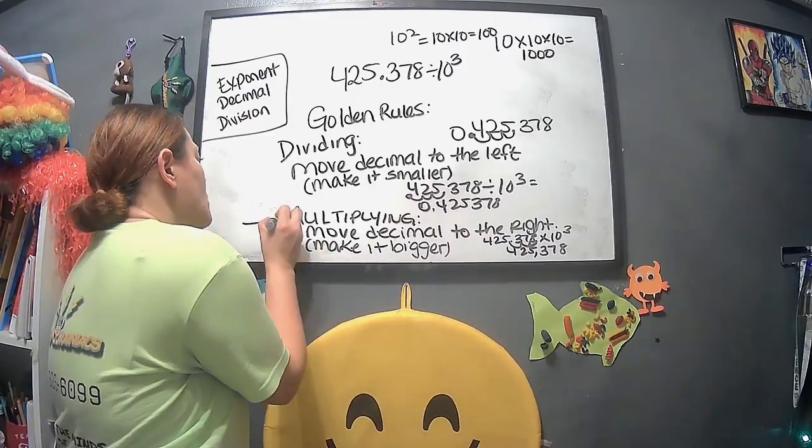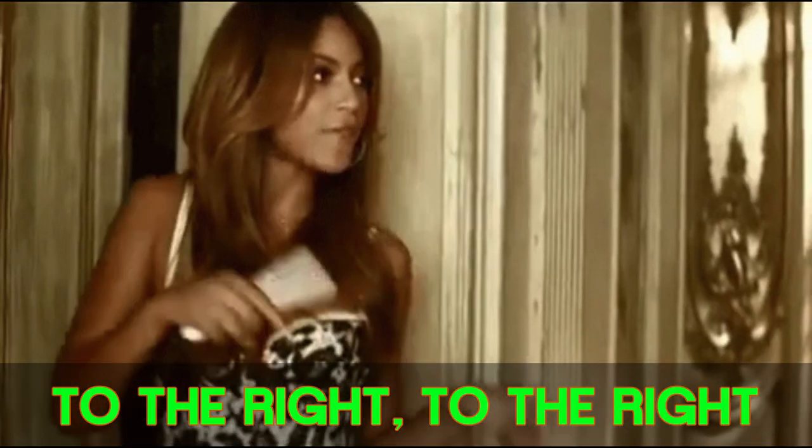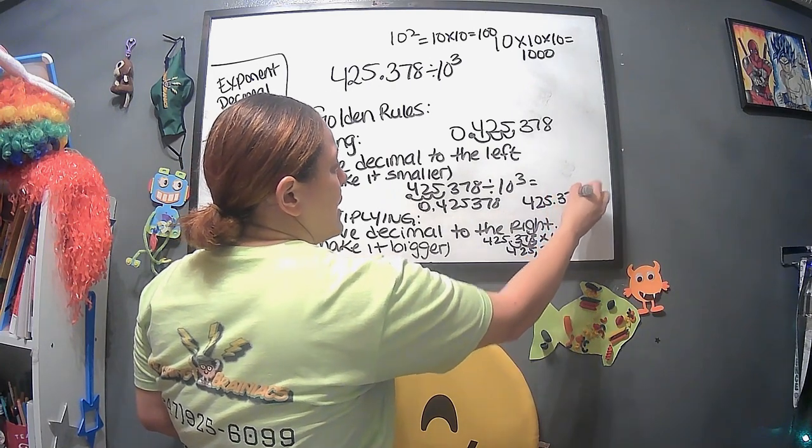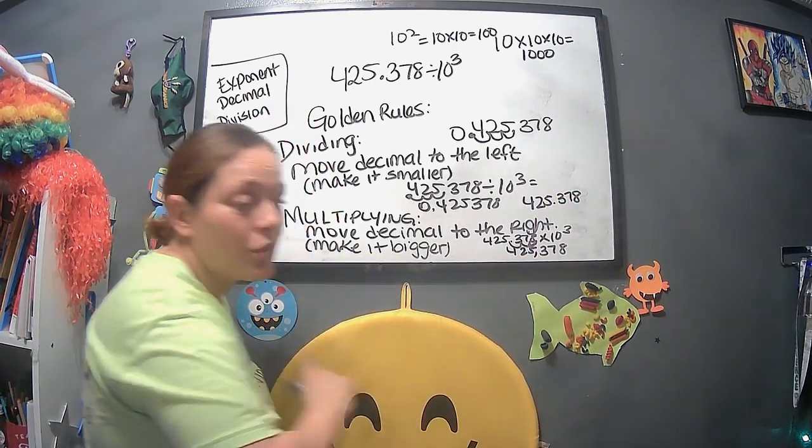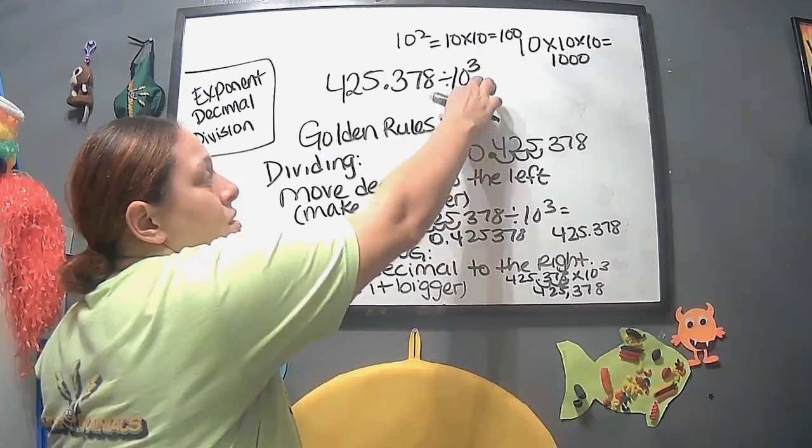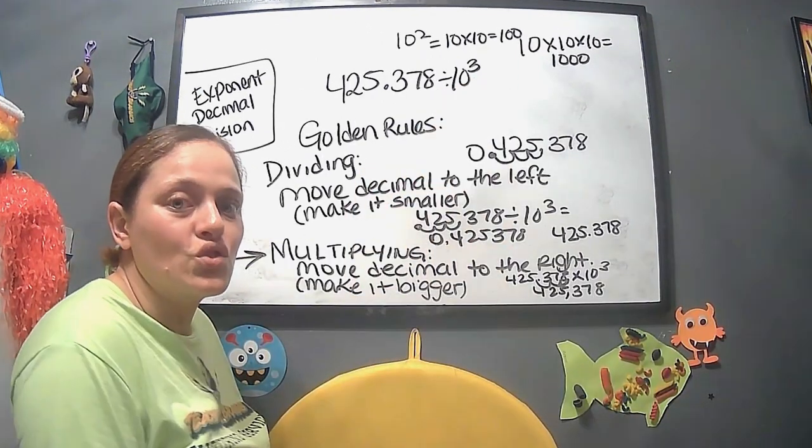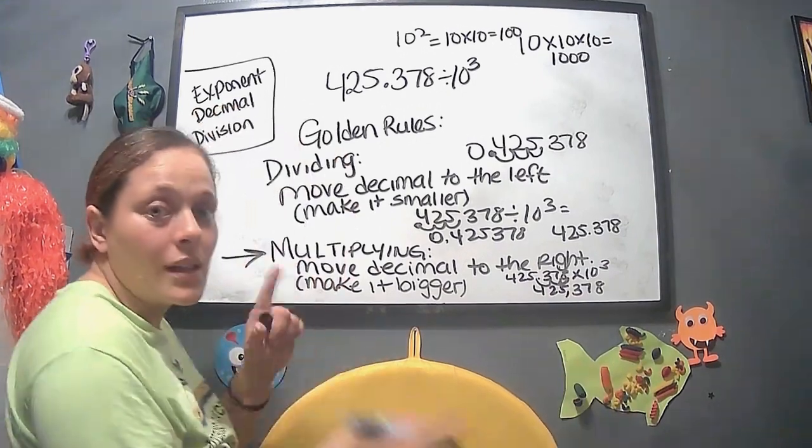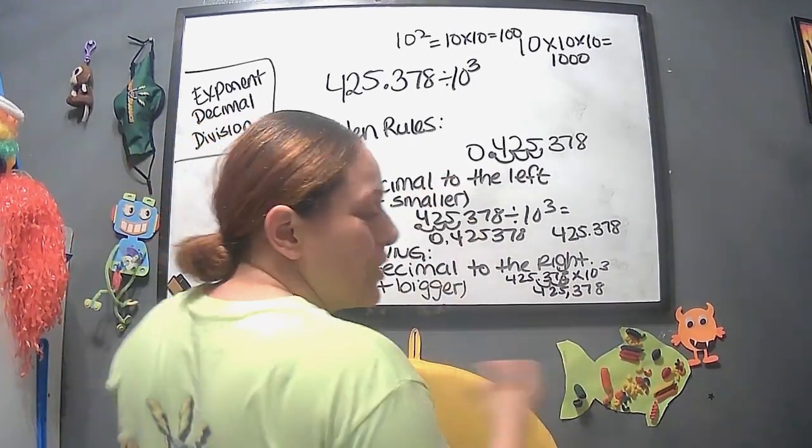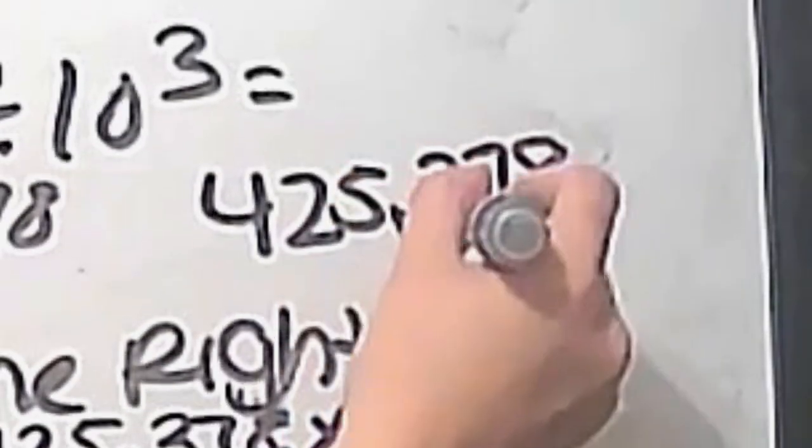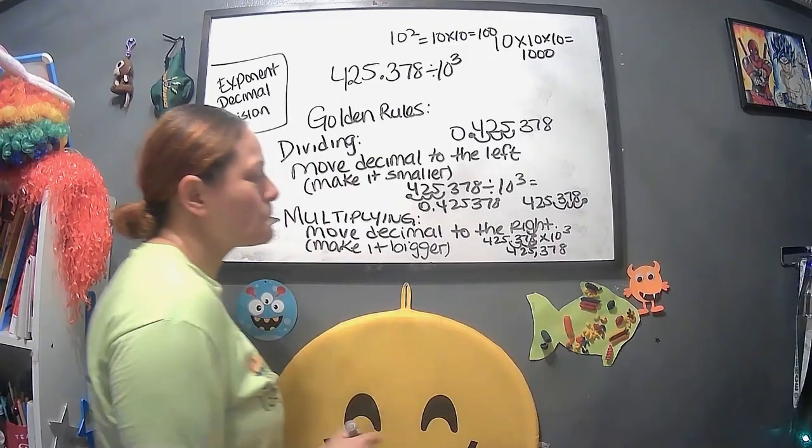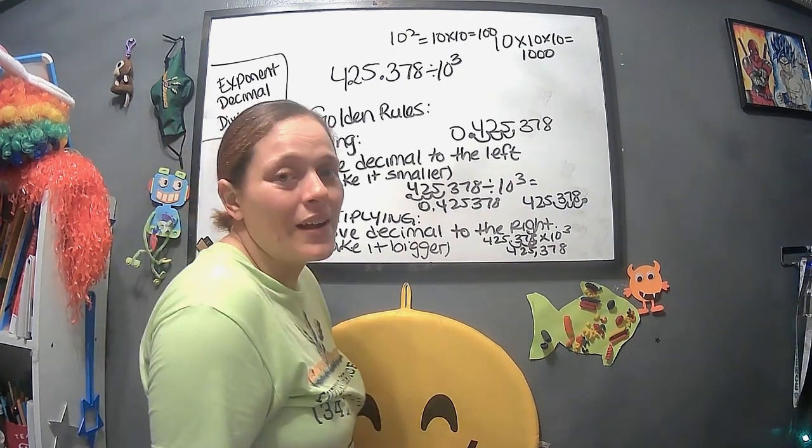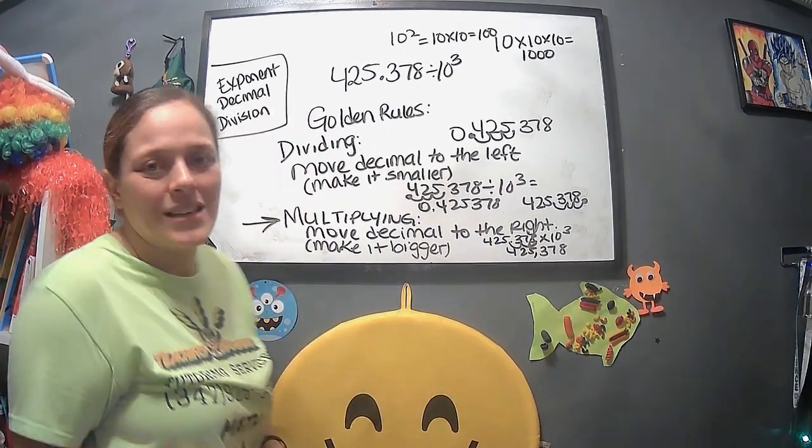Now, when we're talking about multiplying, we have to move it to the right. We're going to take that same number, 425.378. We're going to move it three places to the right. This is the amount of spaces you move, whether to the left or to the right. So if it helps you to the left, to the left, all of that good question, those songs, trust me, it'll help you. So we have 1, 2, 3, right? And now this number becomes 425,378.